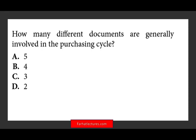The first question asks: how many different documents are generally involved in the purchasing cycle? Simply put, what I'm trying to test here is, do you know what the purchasing cycle is and how many documents are involved? The purchasing cycle is from the time we purchase until the time we receive the material. Let's assume you work in a particular department and you want to purchase a laptop or an iPad. What do you do first? First, you have to fill out a purchase requisition report.